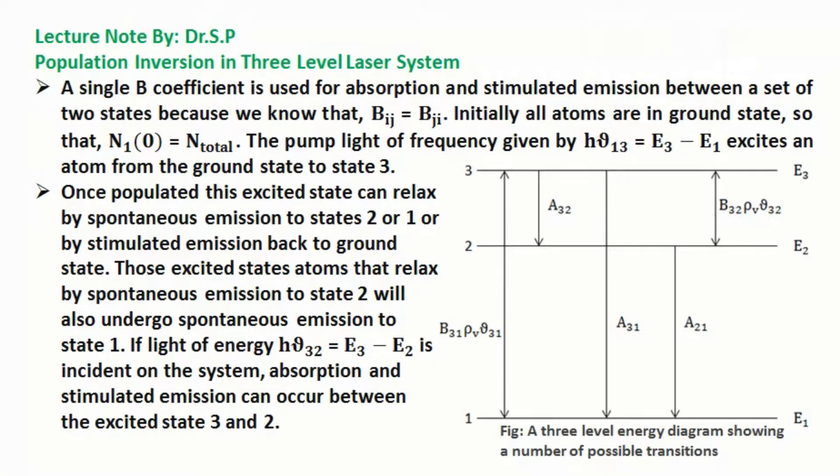Initially all atoms are in ground state, so that the number of atoms in ground state equals the total number of atoms. The pump light of frequency given by hν13, that means transition from 1 to 3 equals E3 minus E1, excites an atom from the ground state to state 3.